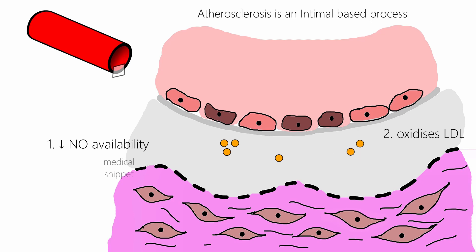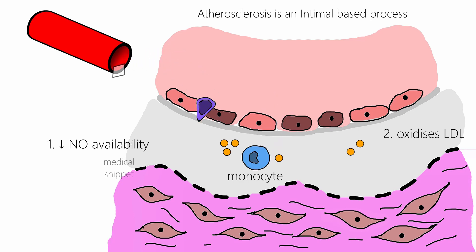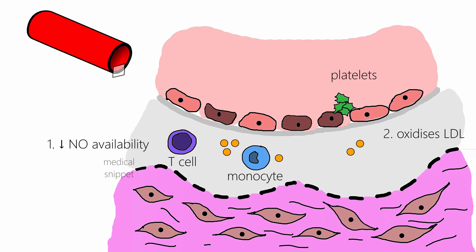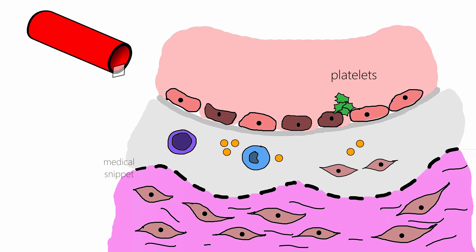Due to reduced endothelial nitric oxide availability, the protective function of nitric oxide is lost. That is, there is now increased leukocyte adhesion and migration, mainly monocytes and T-lymphocytes, platelet adhesion and aggregation, smooth muscle migration and proliferation, and the nitric oxide-mediated beneficial vasodilation effect is lost. Now comes the next damaging part: the oxidized LDL.